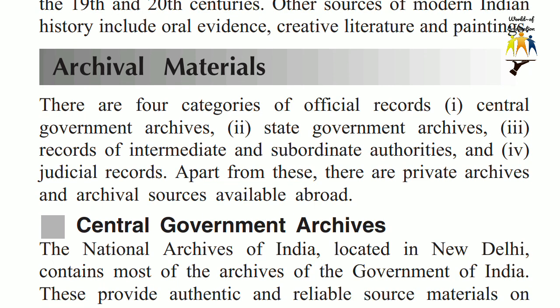Archival Materials. There are four categories of official records: 1. Central Government Archives, 2. State Government Archives, 3. Records of intermediate and subordinate authorities, and 4. Judicial Records. Apart from these, there are private archives and archival sources available abroad.